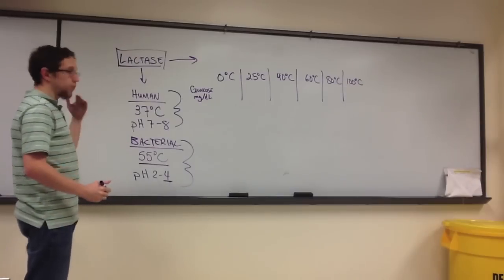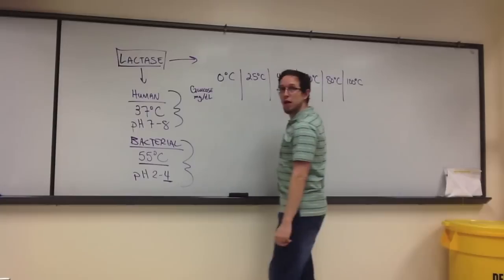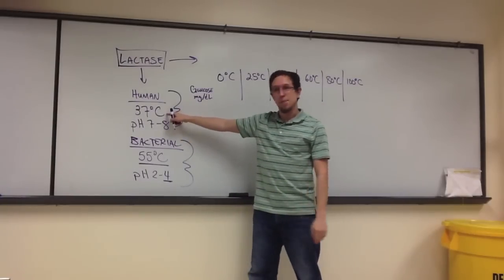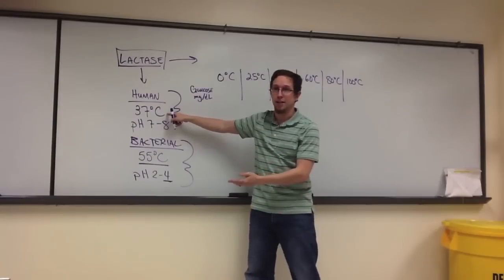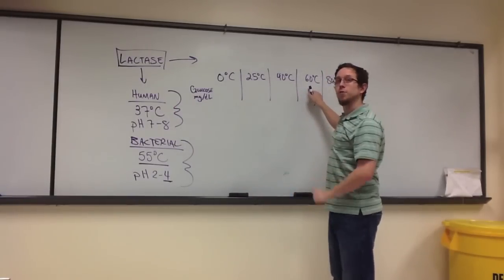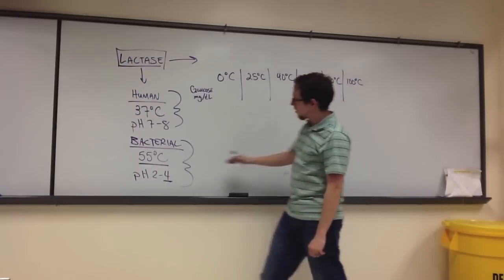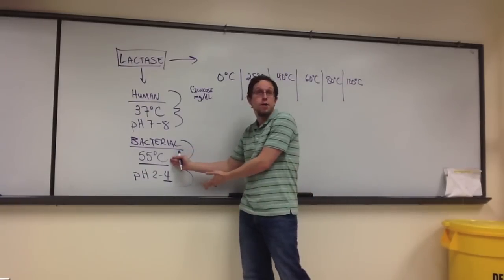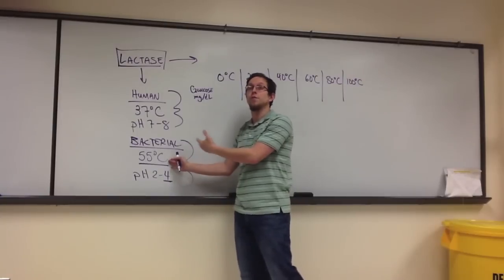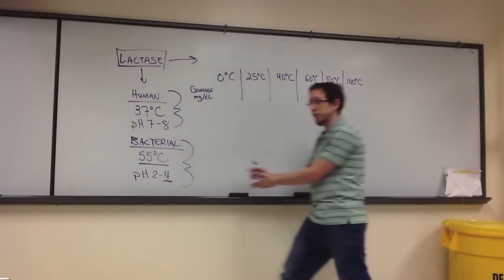If the highest level of glucose is produced at 40 degrees Celsius, then it would lend to the hypothesis that this is human lactase. If, however, the optimal temperature, the highest level of glucose, appears to be around 60, that then leads to the potential that our hypothesis that this lactase was derived from a specific type of bacterial cells is correct or supported.